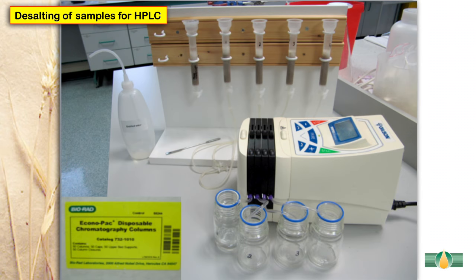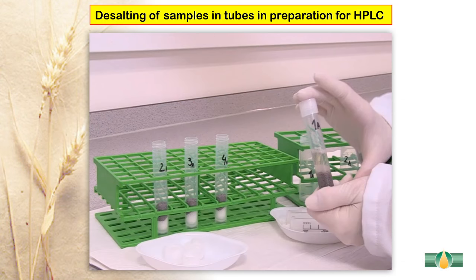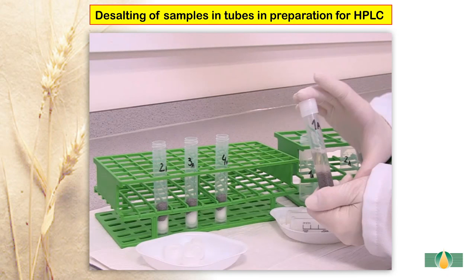Traditionally, samples are desalted in preparation for HPLC by passing the samples through a column of cation and anion exchange resins. The permeate is collected, concentrated and then applied to the HPLC column. Alternatively, samples can be desalted using an in-line Bio-Rad desalting pre-column, though these desalting columns are expensive and can only handle 20 to 30 samples. The use of the desalting column can be increased 10 to 15 fold by first removing the bulk of the salt by adding the sample to a mixture of anion and cation exchange resins in a tube with mixing over 5 minutes, removing over 90% of the salt.